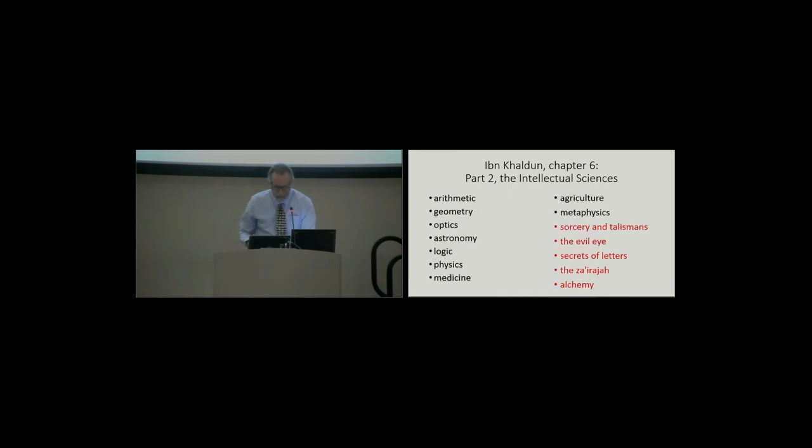Then he moves on to the intellectual sciences. This does not begin with a surprising array of topics. He starts with the mathematical quartet, the quadrivium of arithmetic, geometry, optics, and astronomy. He moves on to logic, physics, medicine, agriculture, and metaphysics. But then he has some other stuff in there, which you might not find in your department of physics or biology today. Namely, sorcery and talismans, the evil eye, secrets of letters, a technique known as zayiraja, and alchemy.